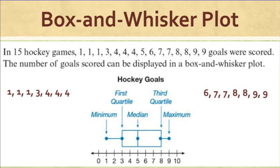Let's take a look at an example. In 15 hockey games, the goals scored were: 1, 1, 1, 3, 4, 4, 4, 5, 6, 7, 7, 8, 8, 9, 9. The number of goals scored can be displayed in a box and whisker plot, and this one has been done for you. Since the goals are already in order — most times they won't be — you need to put them in numerical order from smallest to largest, which makes it easier to find the quartiles, the median, and the lowest and largest numbers.